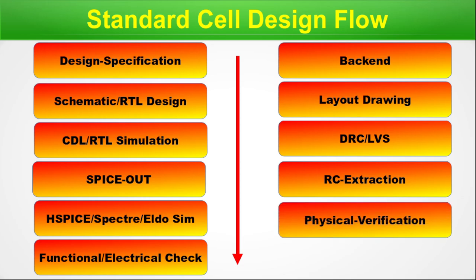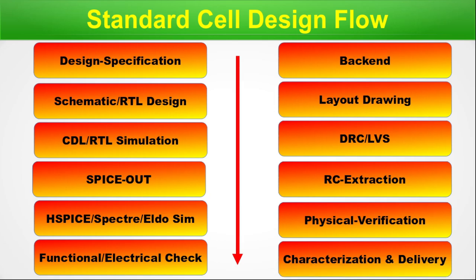Next we have physical verification, which includes multiple checks: antenna, electromigration, IR drop analysis, aging analysis, and many more performed on the individually designed cell. Once all these things are done and everything is ready, we can enter into the characterization process. Once the characterization result is produced, we proceed towards the standard cell package delivery.